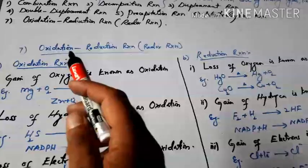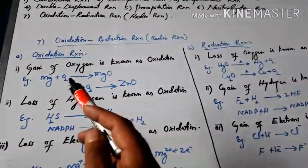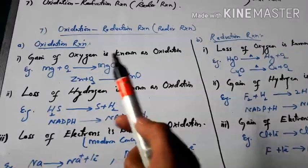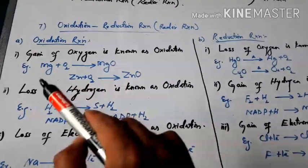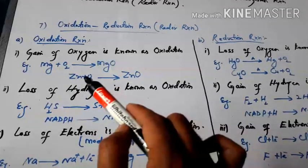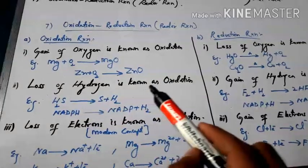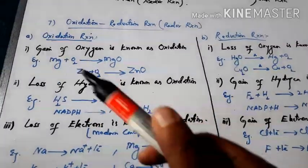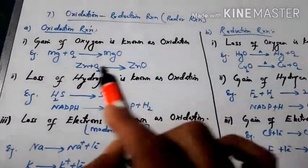The seventh type is oxidation-reduction reaction, or redox reaction. For oxidation reaction: the first definition is that the gain of oxygen is known as oxidation — if some substance gains oxygen, we say oxidation has occurred. For example, magnesium plus oxygen gives magnesium oxide — here magnesium gains oxygen, so magnesium is oxidized. Similarly, zinc plus oxygen gives zinc oxide — zinc gains oxygen, so zinc is oxidized. The second definition is that loss of hydrogen is known as oxidation.